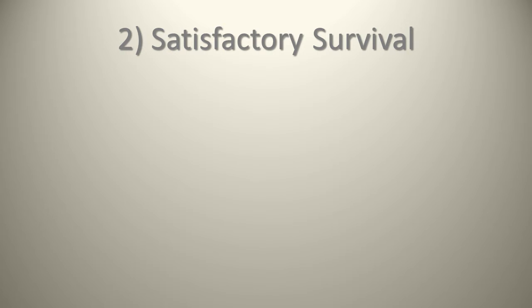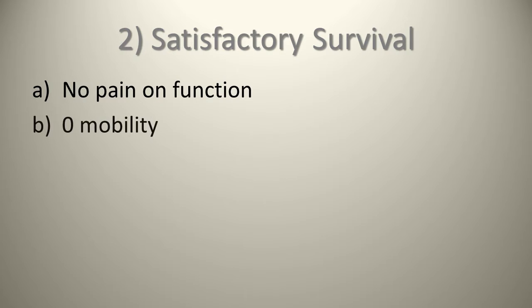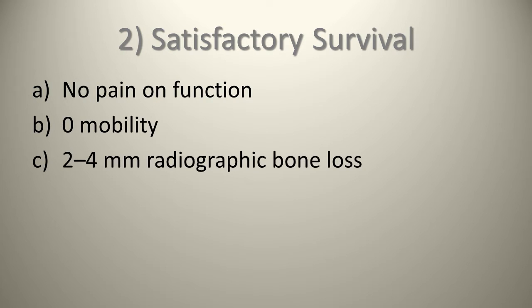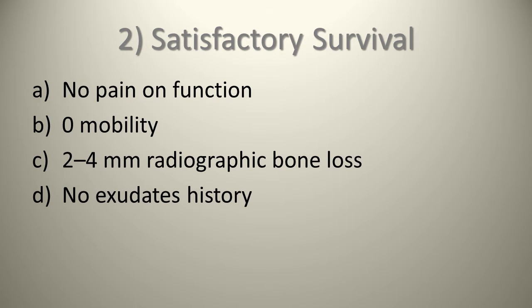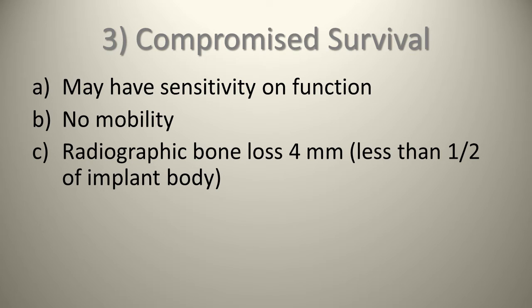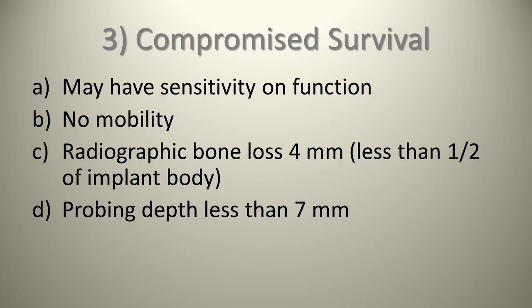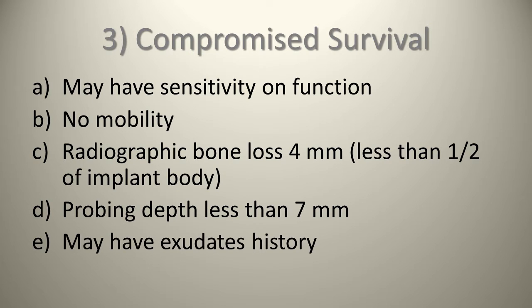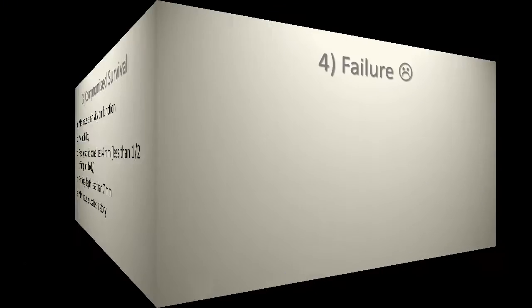Satisfactory survival includes: no pain upon function, no mobility, two to four millimeters of radiographic bone loss, and no exudate history. Compromised survival may include some sensitivity on function, no mobility, radiographic bone loss of about four millimeters but less than half the implant body, probing depths less than seven millimeters manageable with home oral hygiene aids, and a possible exudate history that can be eliminated with treatment.